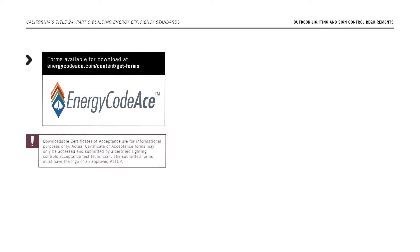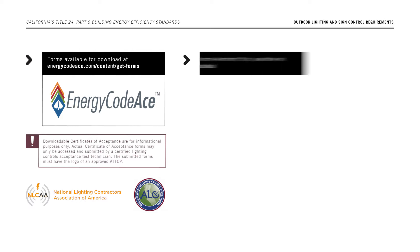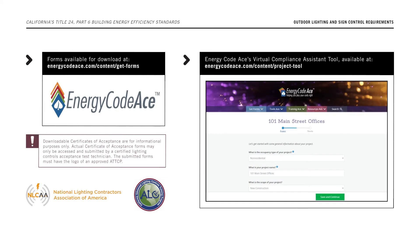Downloadable certificates of acceptance are for informational purposes only. Actual certificate of acceptance forms may only be accessed and submitted by a certified lighting controls acceptance test technician. The submitted forms must have the logo of an approved acceptance test technician certification provider, or ATTCP. Additionally, you can access Energy Code ACE's virtual compliance assistant tool at www.energycodeace.com, which is available to help you fill out the certificates of compliance.